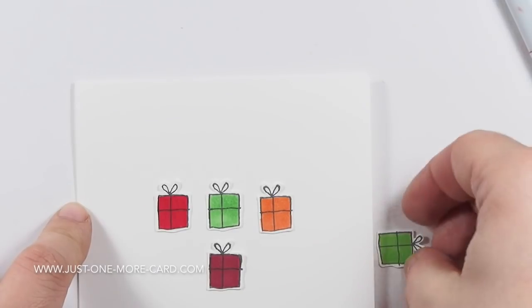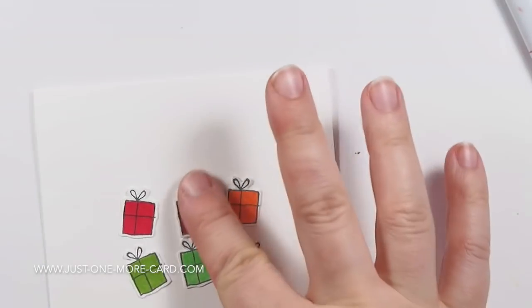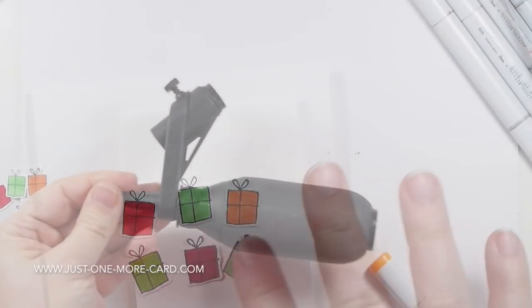Then you can start arranging them on your project and figuring out which pattern you like. For example, you can do them like this or you can put all the colors in one row. I prefer the other way.